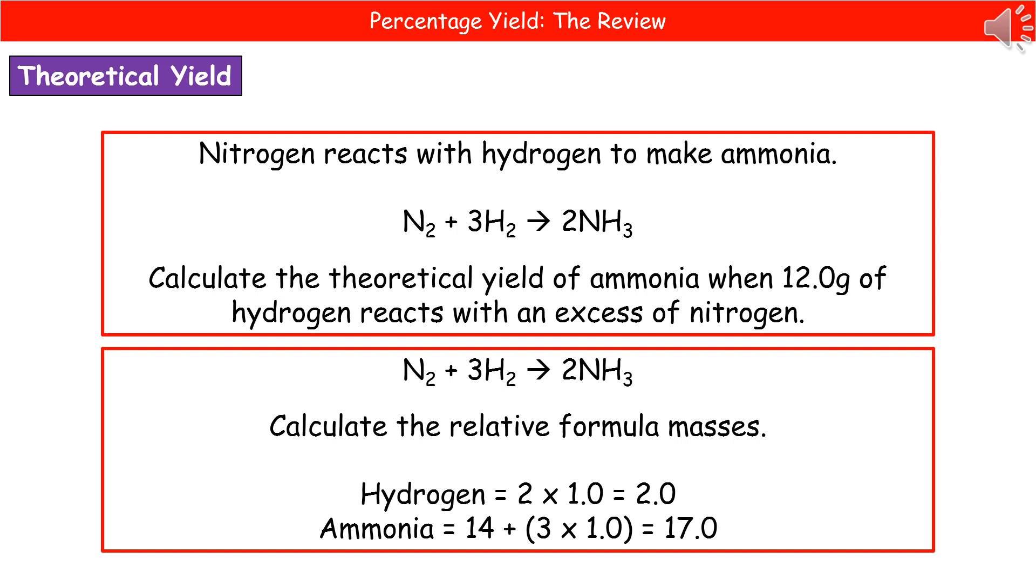The first thing we need to do is to calculate the relative formula masses of the two chemicals we're concerned with. Because in the question it tells us that there is an excess of nitrogen, we can ignore the nitrogen on the left there. We're only concerned with hydrogen and with ammonia. Using the periodic table, which is on that data sheet in the exam - remember that's not just a piece of paper to doodle on, that actually does have a periodic table on the other side if you flip it over - look up hydrogen and you'll find that its relative atomic mass is 1.0. And if we look, we've got two hydrogens there, so H2 tells us there's two of them. So 2 times 1.0 gives us 2.0 for our hydrogen.